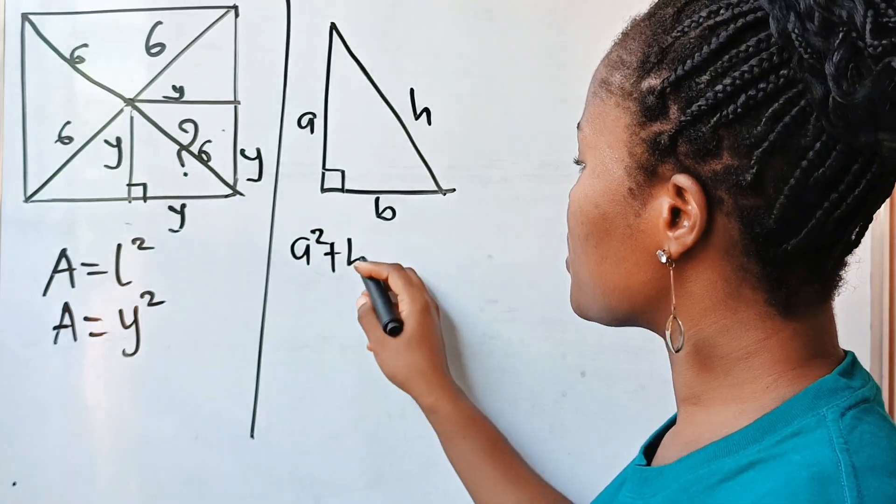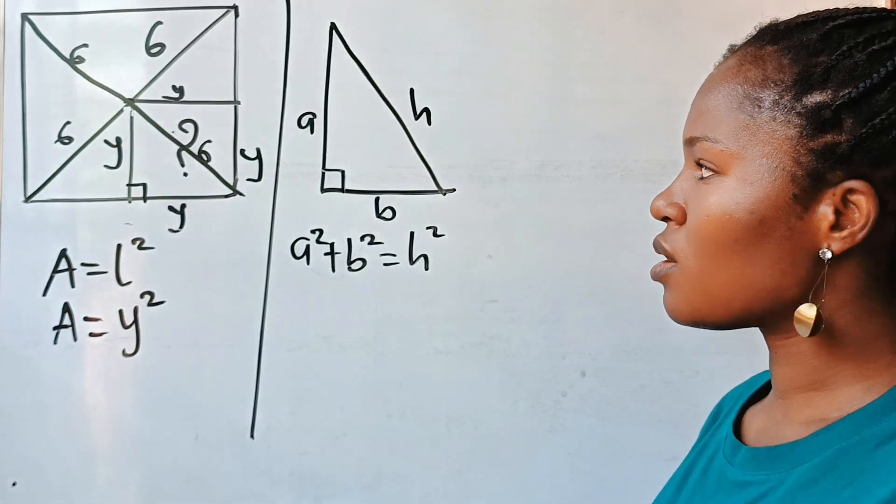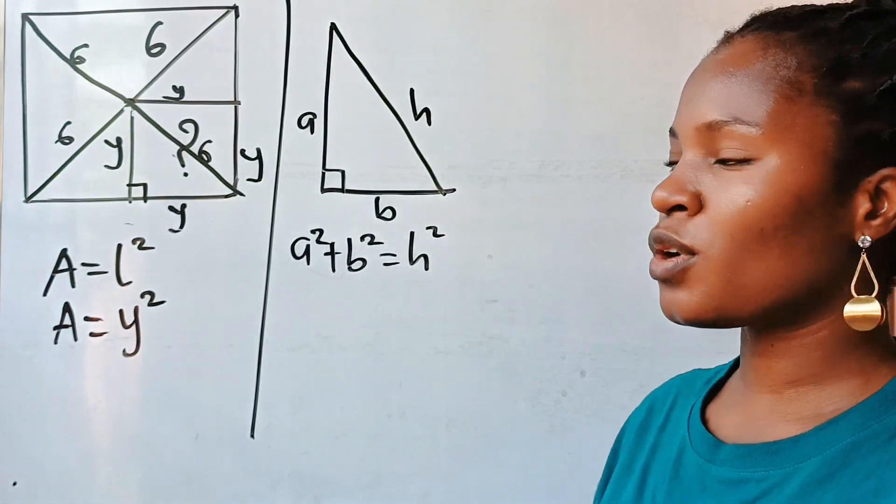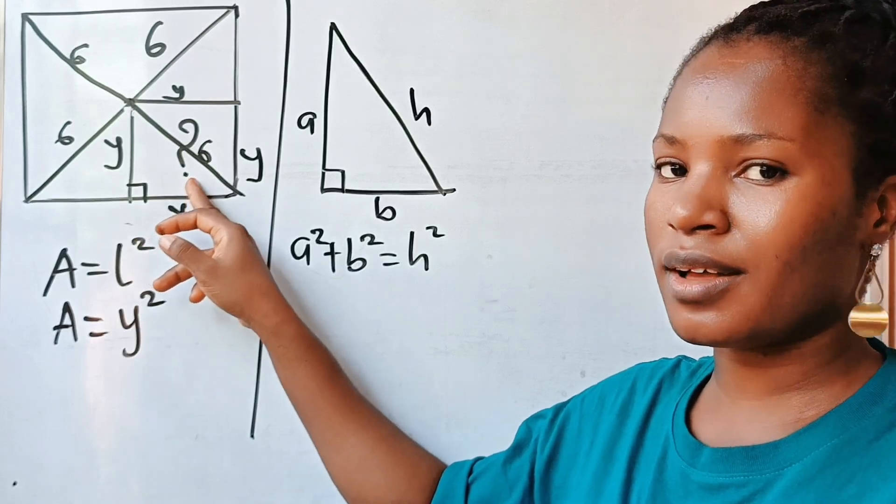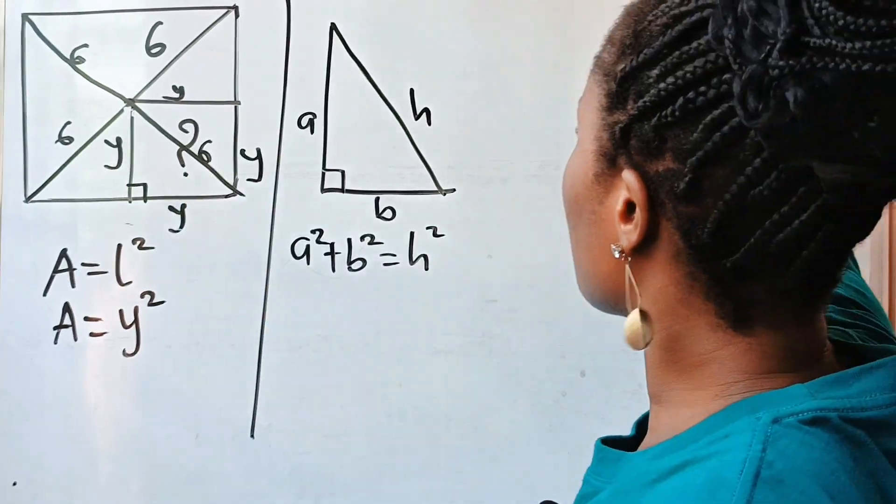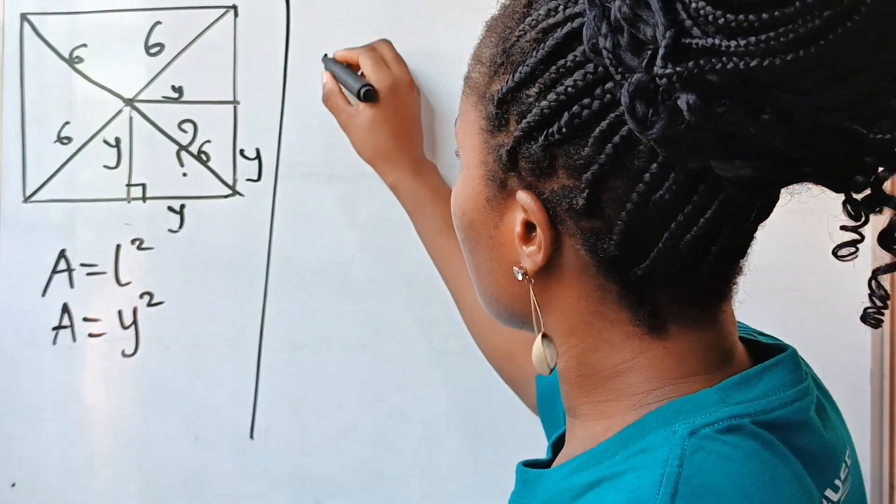Now let us draw this out from here. Notice that we have a right angle triangle in our diagram, so let's draw it out. So if we draw it out we have this hypotenuse.